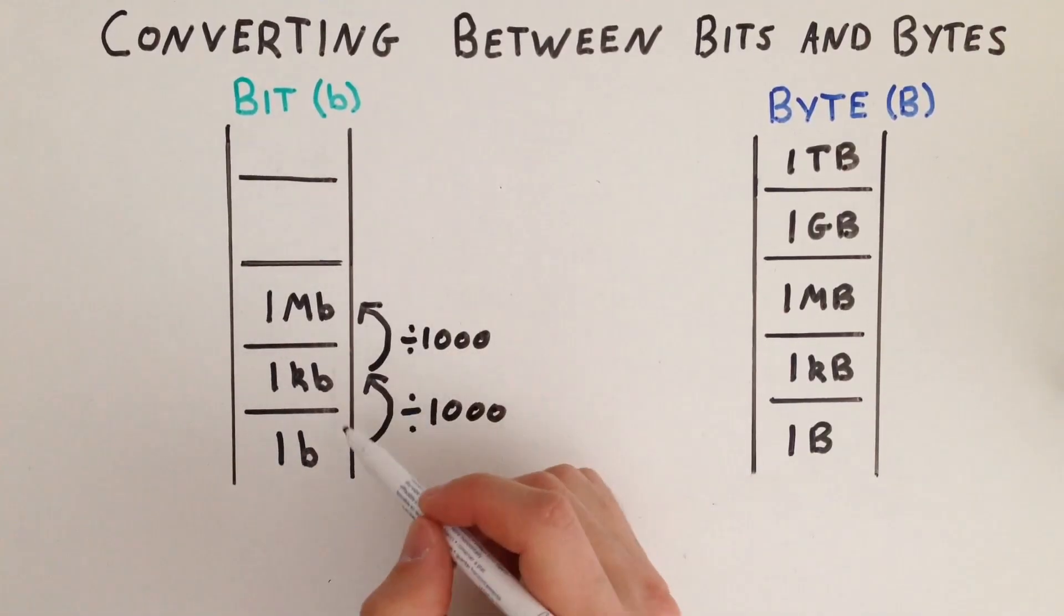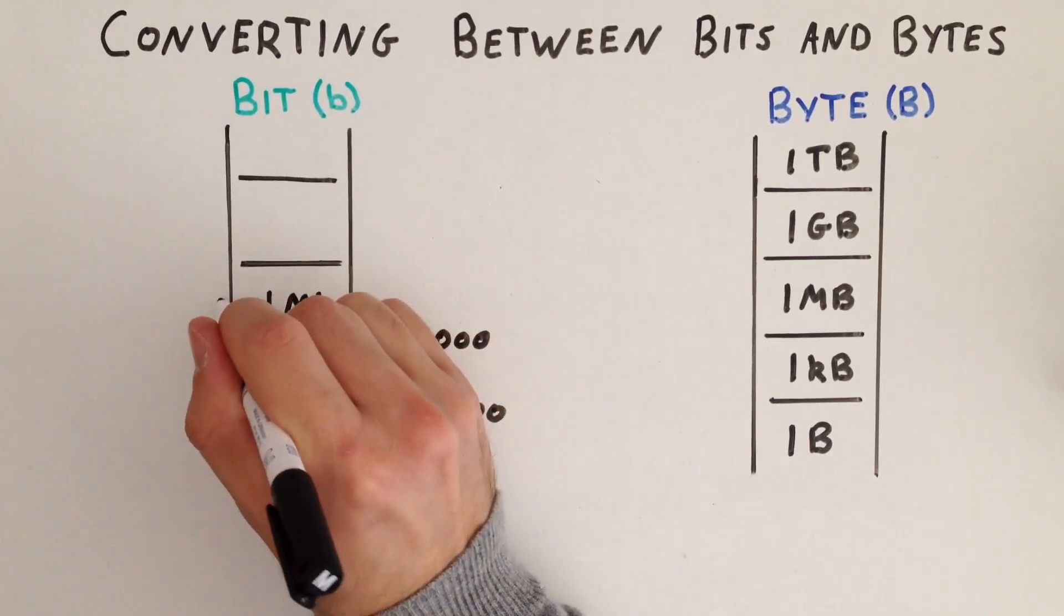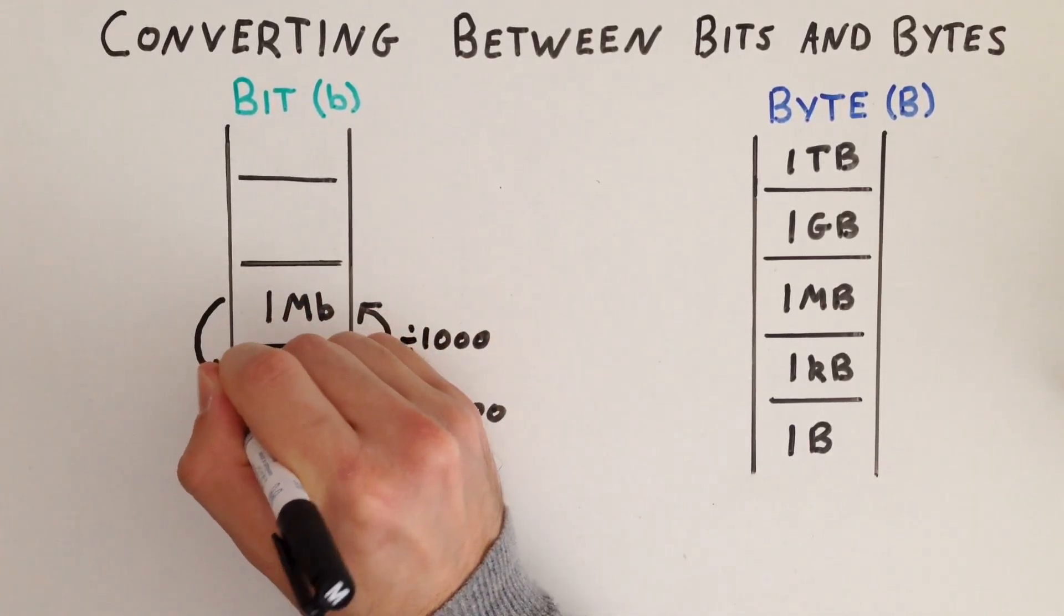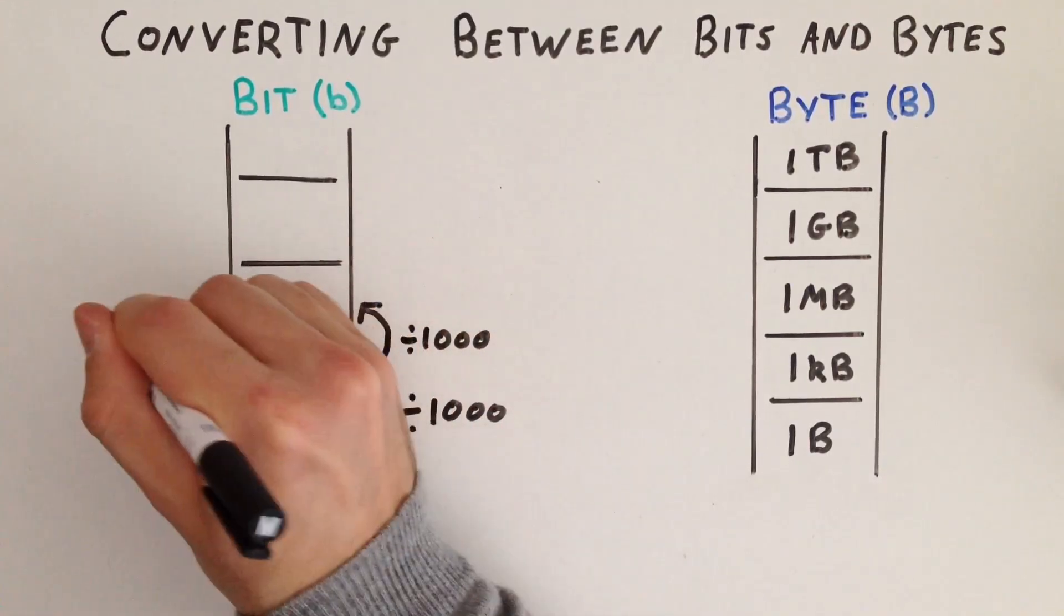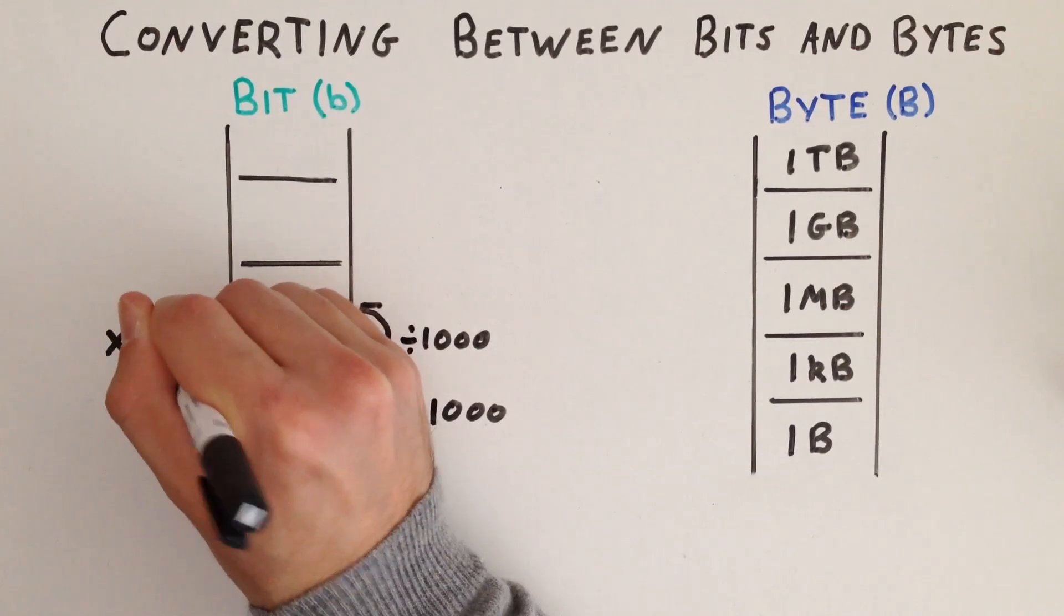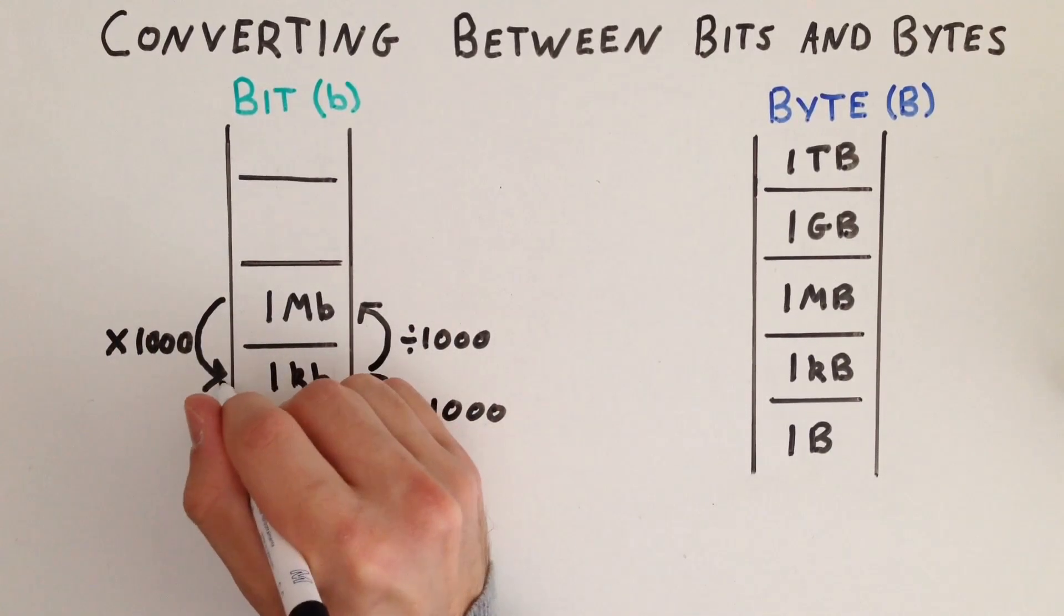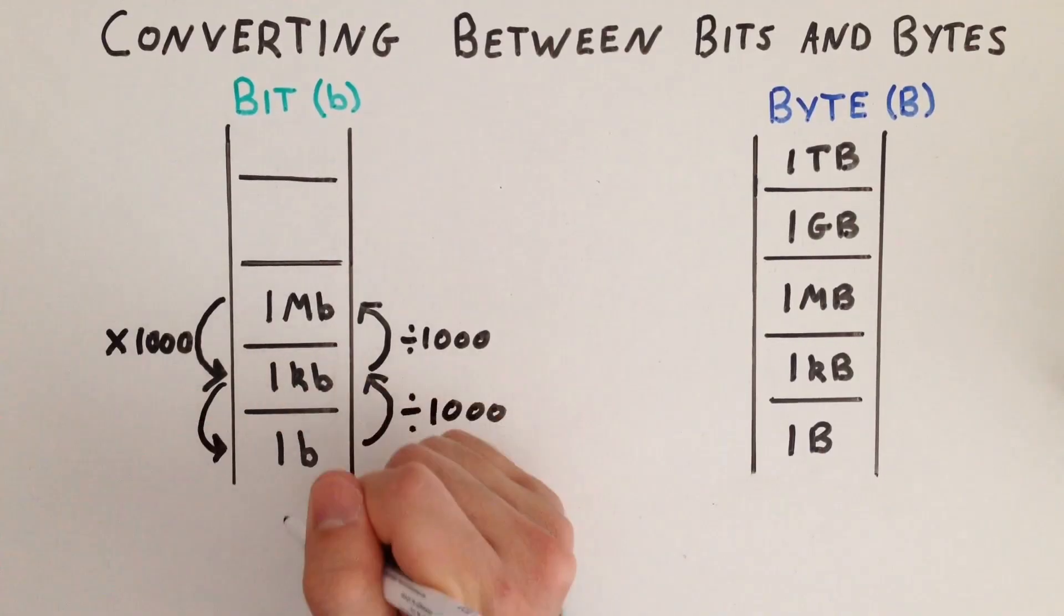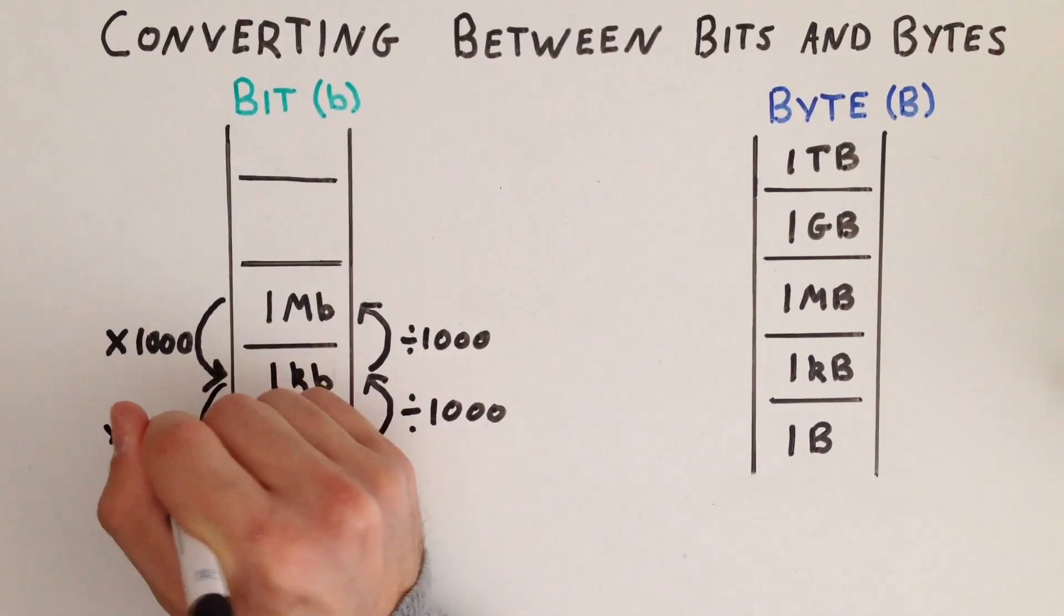So if we divide when going up the ladder, we multiply when we want to climb back down. So 1 megabit equals 1 times 1,000 kilobits. And again, 1 kilobit is equal to 1,000 bits.